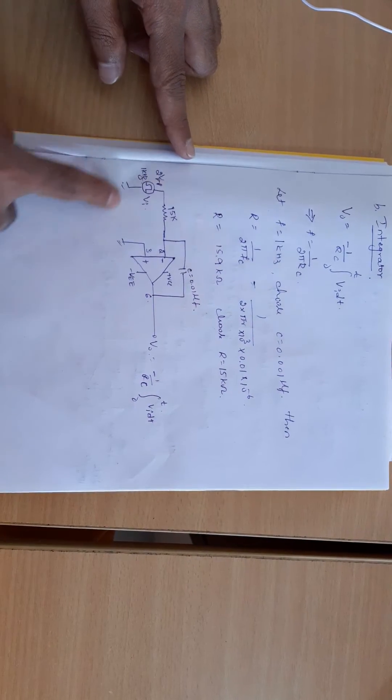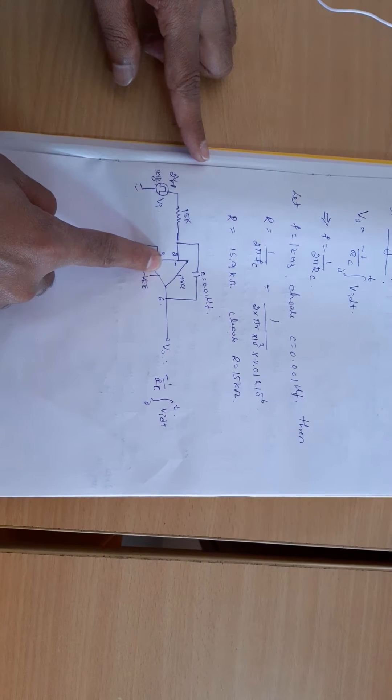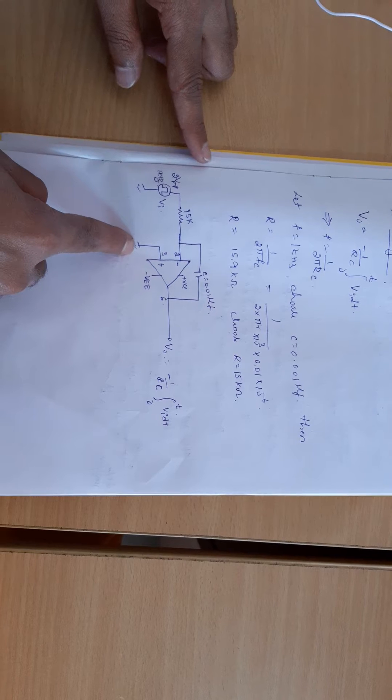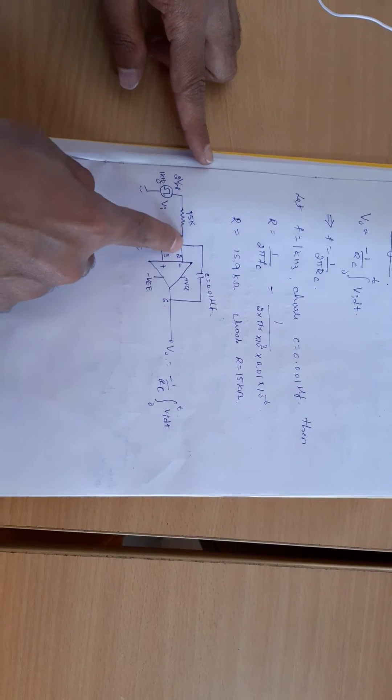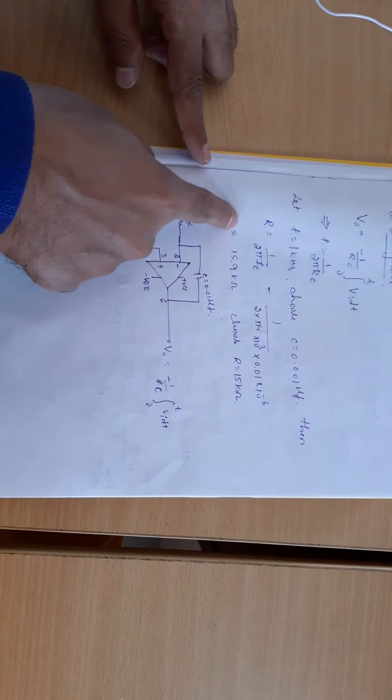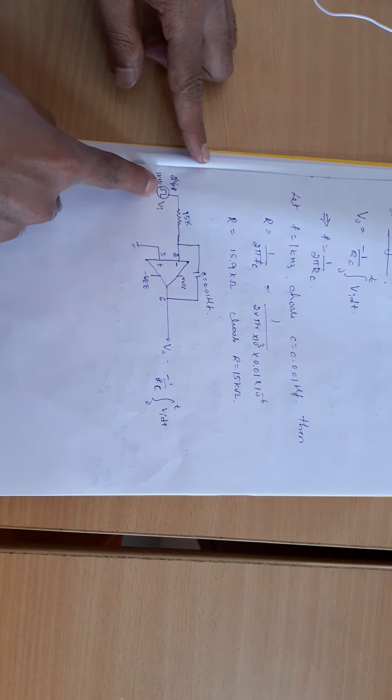Now observe the circuit diagram. Here we have used op-amp μA741. Pin number 2 is the inverting terminal, pin number 3 is grounded (that is the non-inverting terminal). From pin number 2 to 6 we have connected a capacitor of 0.01 microfarad. According to our design, the R value we have taken is 15 kilo ohm.